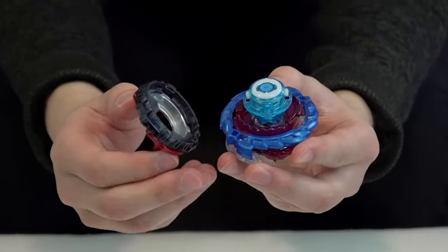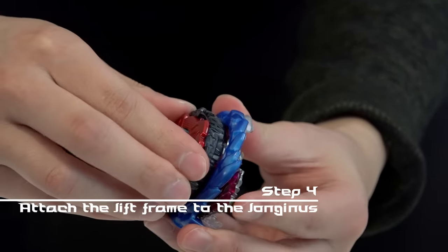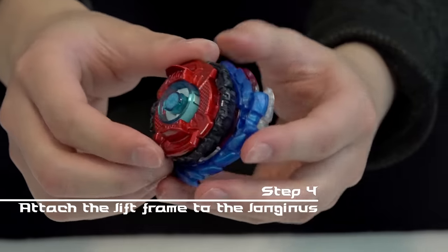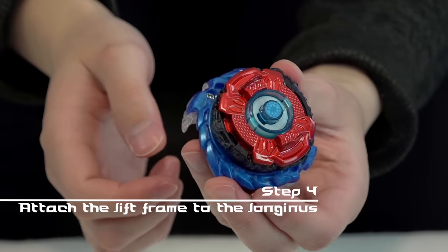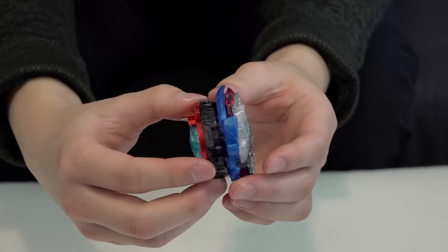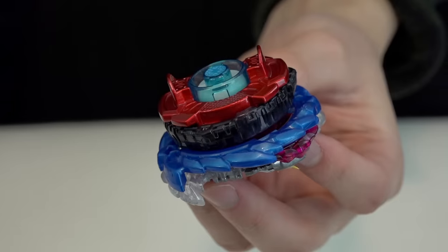Step four, place the frame and disc on the bottom of the Nightmare Longinus and you're going to feel that you can actually lock in the frame onto Nightmare Longinus. So that way you basically have one big piece right here. It's looking so funky. Basically using that Lift frame to attach two sides together.